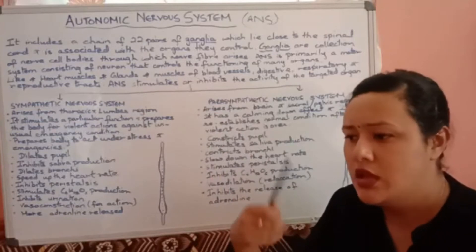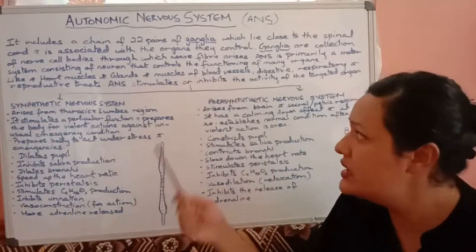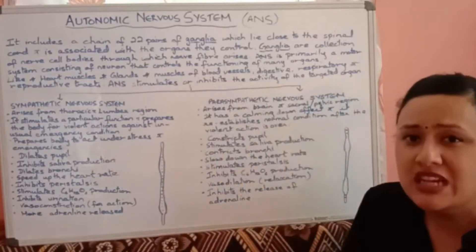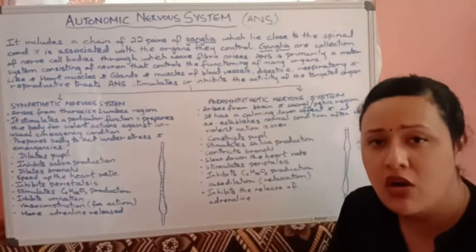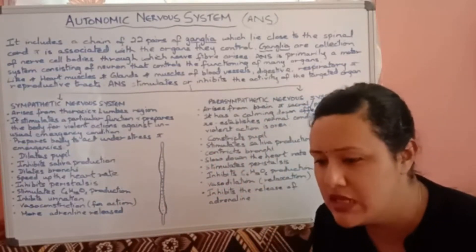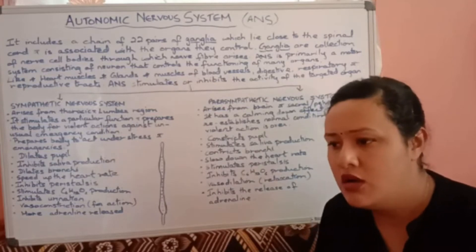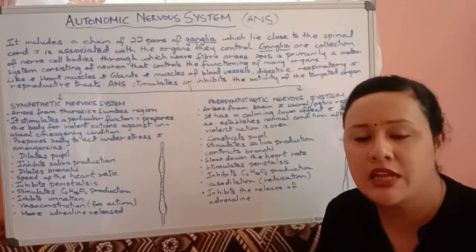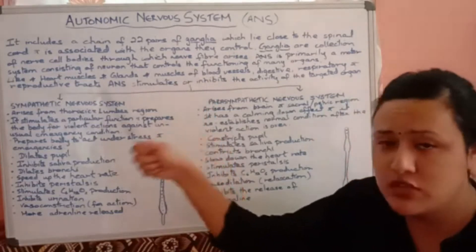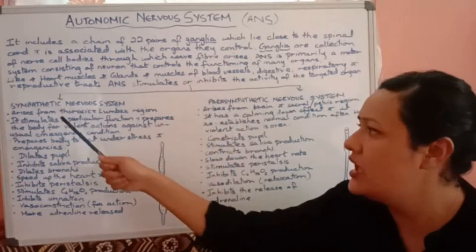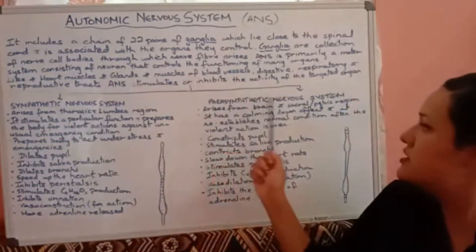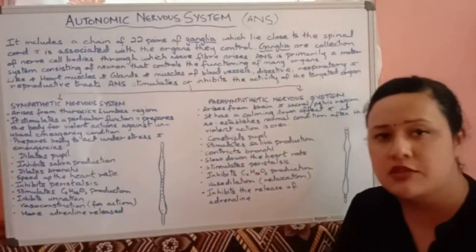The autonomic nervous system has two main functions: it either stimulates or inhibits the activity of a targeted organ — either preparing or stopping the activity of that particular organ. Under this, there are two types: the sympathetic nervous system and the parasympathetic nervous system.